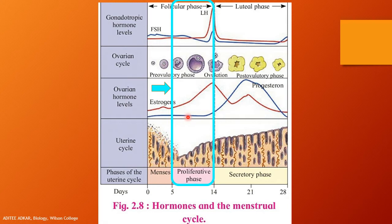Looking at the graphical representation of the follicular or proliferative phase, from day 5 to day 13 of the cycle, the endometrium is thickening again — you can see a rise in the endometrial level. There is a rise in estrogen level as estrogen is being secreted by the developing follicles. The follicles develop from primary follicle stage to secondary to Graafian follicle stage in the ovaries, under the effect of FSH or follicle-stimulating hormone.